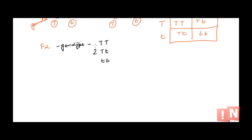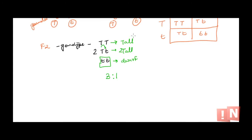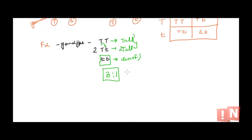What will be the phenotype for each of these? Capital T capital T — both dominant alleles — so this plant is tall. Capital T small t — capital T is dominant over dwarf — so this plant is also tall. Small t small t — no capital T, only the allele for dwarf — so this is a dwarf plant. The phenotypic ratio for the F2 generation is 3:1 — three tall and one dwarf.